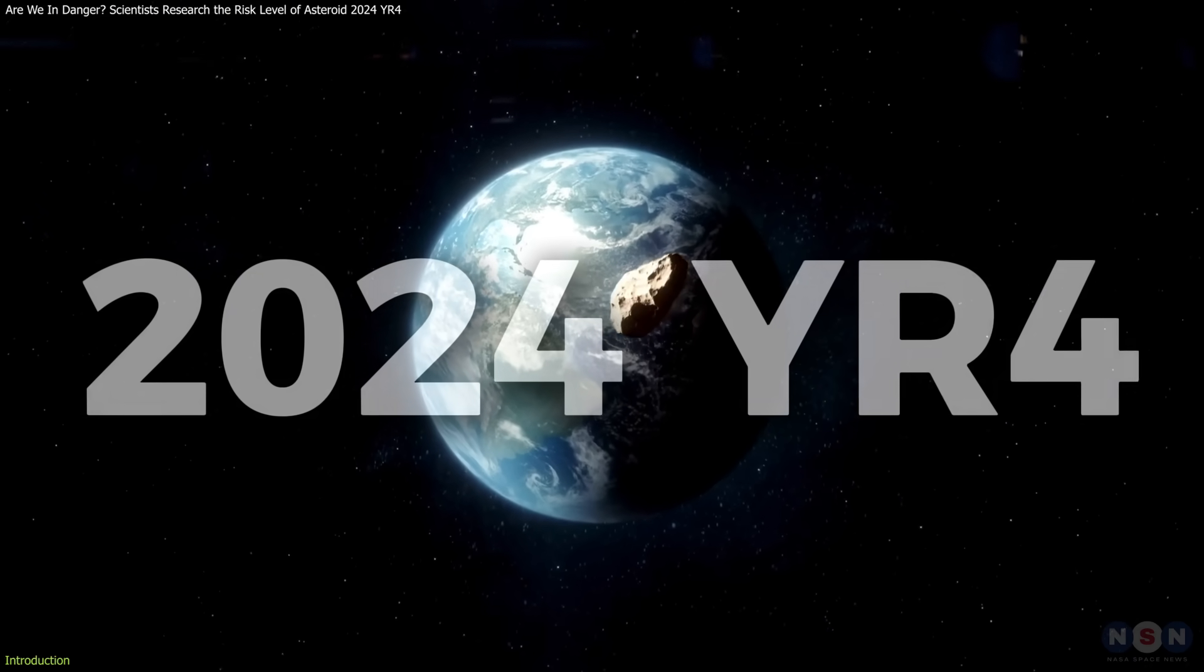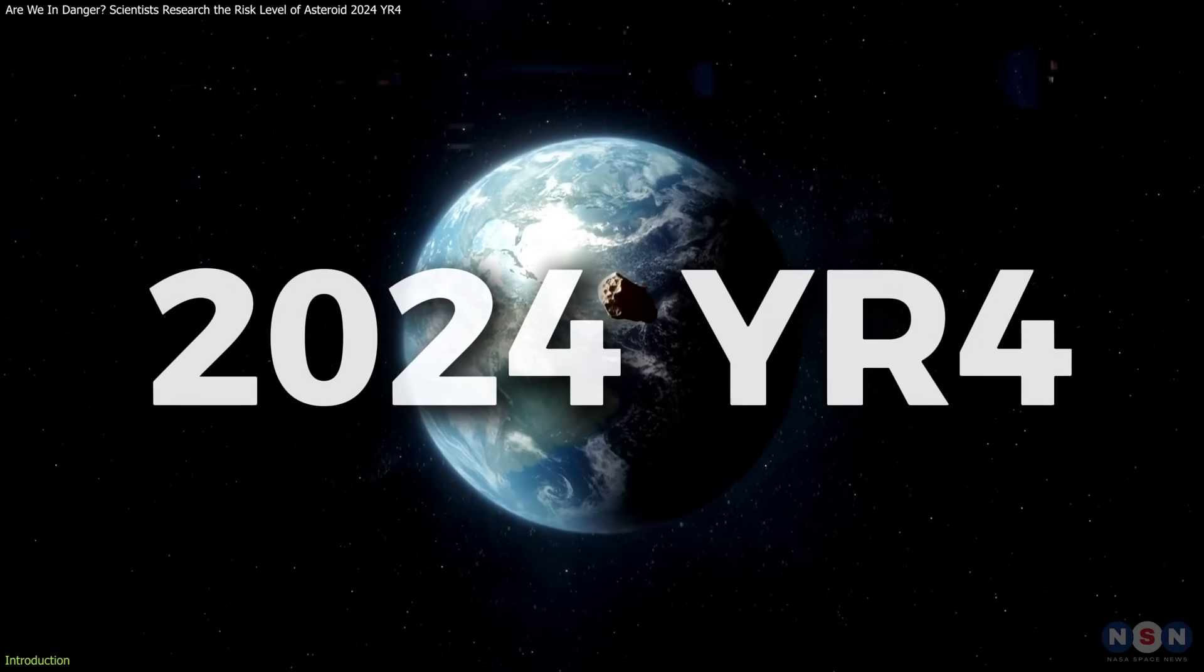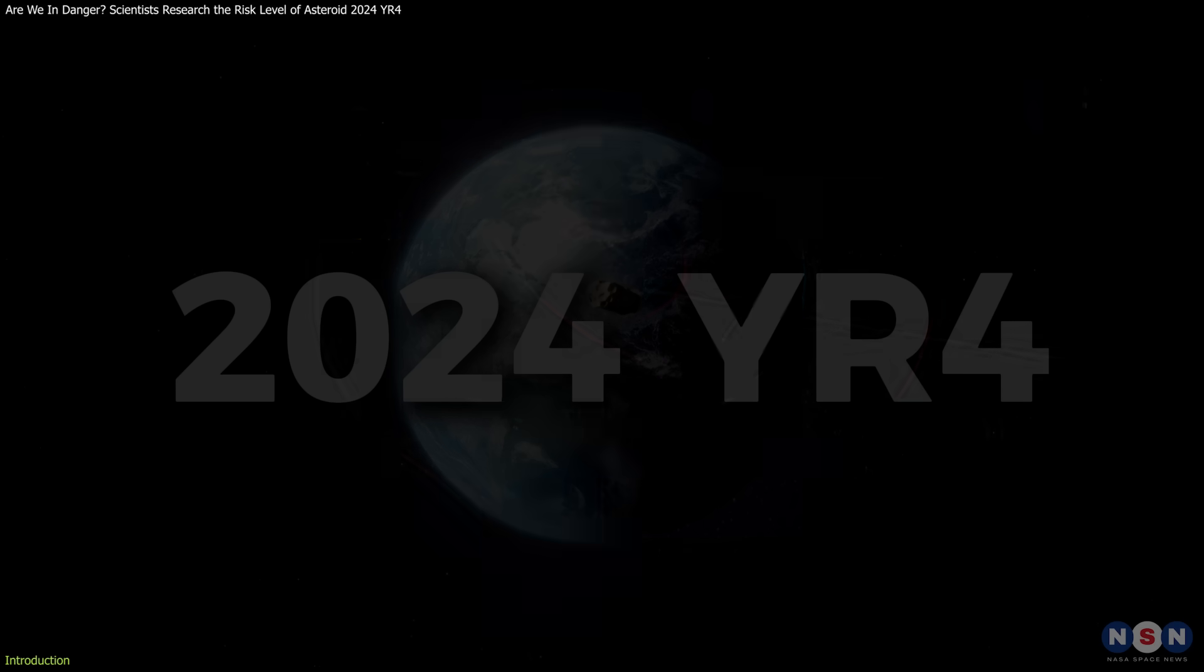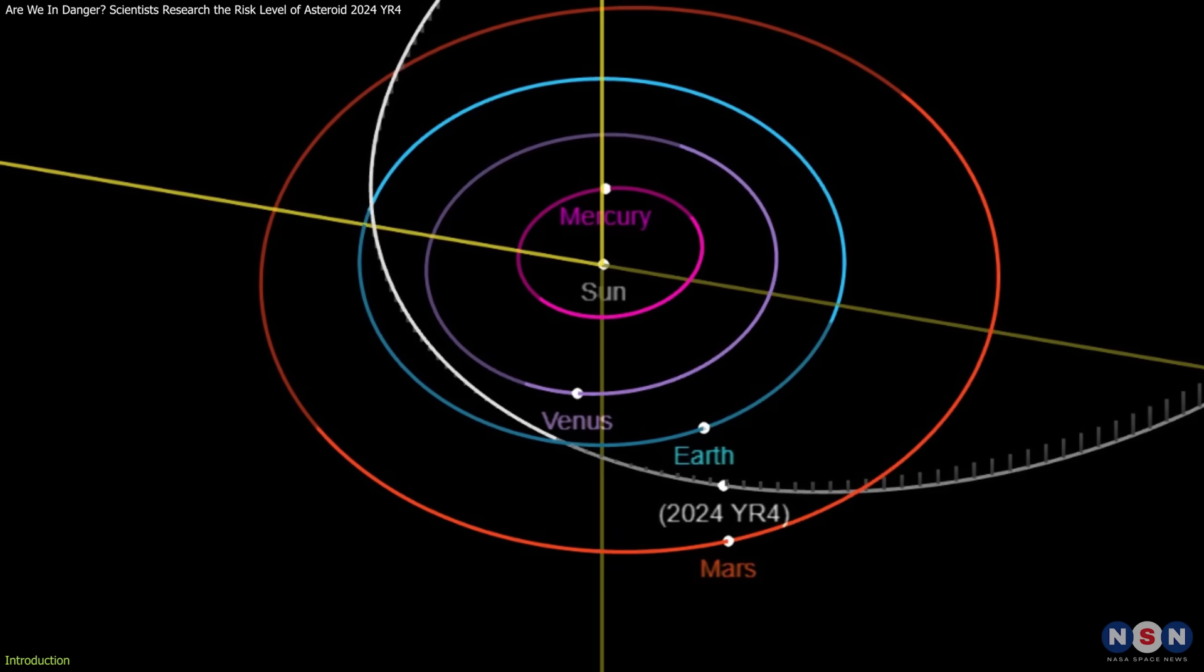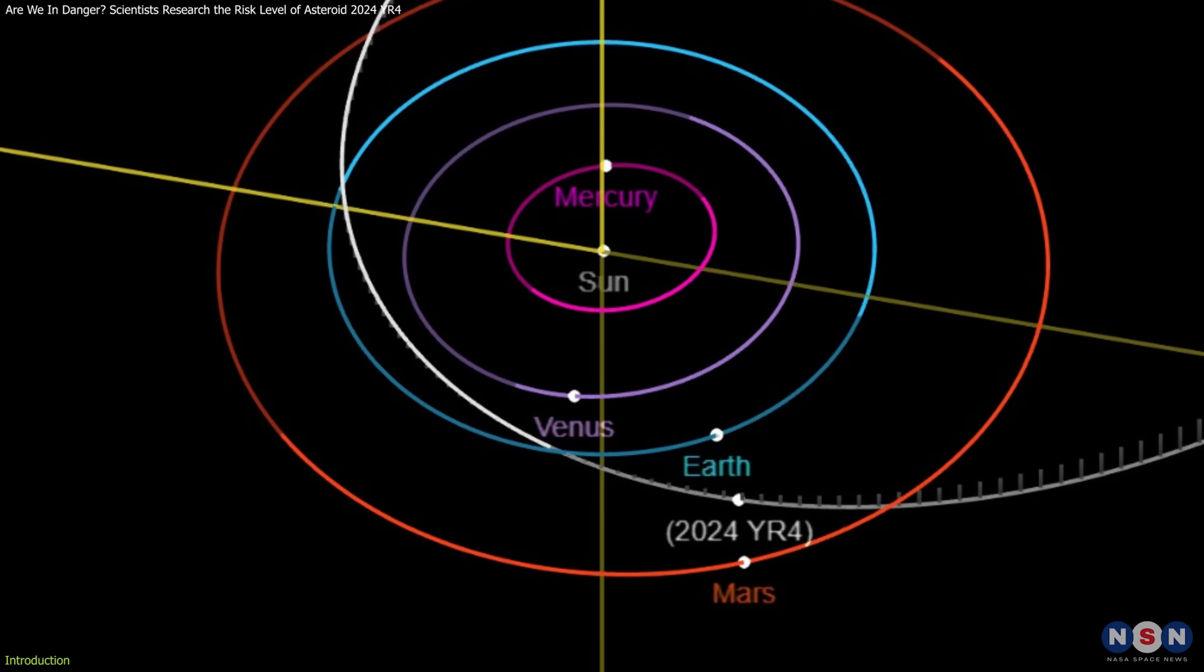Asteroid 2024 YR-4, discovered in December 2024, has garnered significant attention due to its potential close approach to Earth on December 22, 2032.